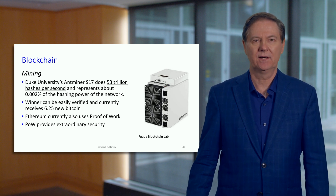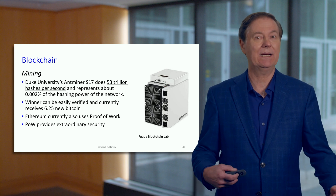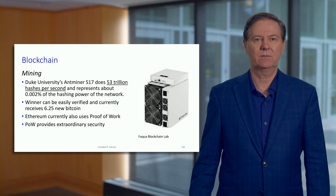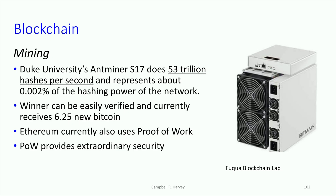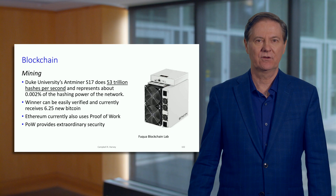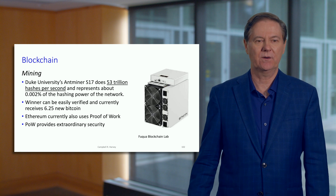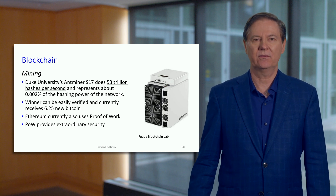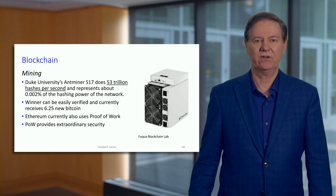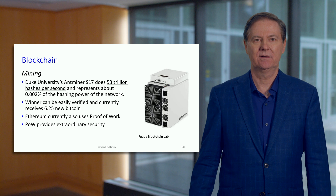At Duke University, we have a blockchain lab for students with demonstration machines that miners actually use. We have a mining operation with an Antminer S17 — and that's what it looks like on the right. It does 53 trillion hashes per second, so it's a very powerful machine. Even so, the winner gets a reward of a new Bitcoin, and if you were just mining on your own it would be just infeasible — you'd have to wait centuries before you'd win even one. Our machine, even though it does 53 trillion hashes per second, is actually only 0.002% of the network's power.